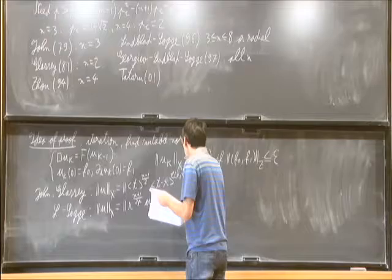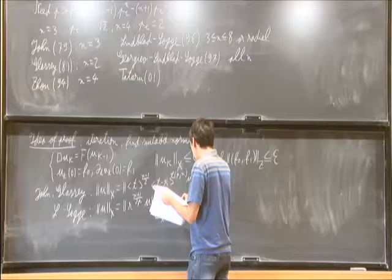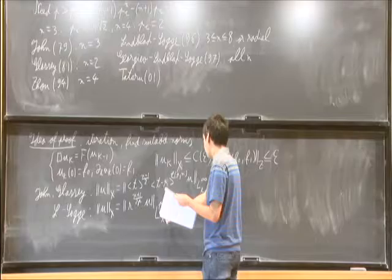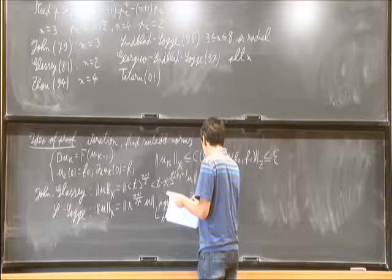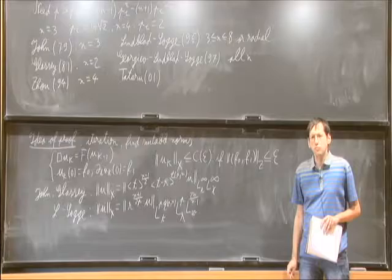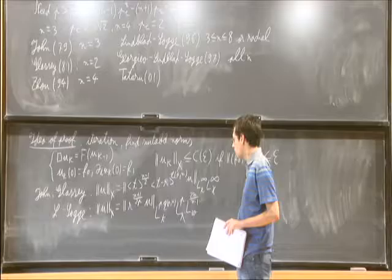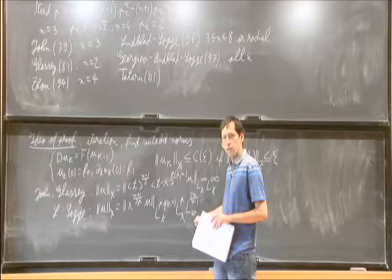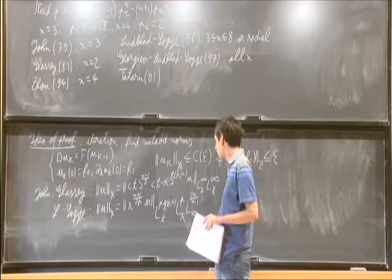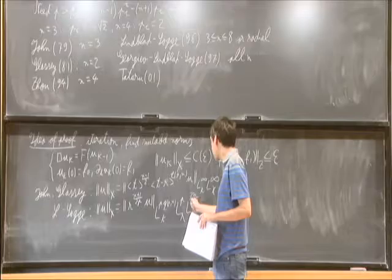So Lindblad and Sogge used a norm much closer to what we use: a weighted Strichartz norm, r^{(n+1)/(2p)} times u in L^{pq}_t L^p_r L^2_omega, where the exponent q depends on p and n. They decomposed everything into polar coordinates and used different L^p norms for each component: L^p_t L^p_r L^{2n/(n-1)}_omega. Omega is the angular coordinate, so these are mixed norms in each variable.